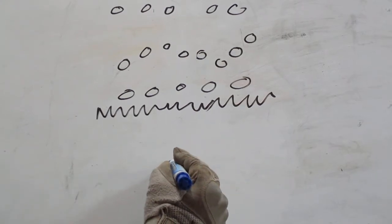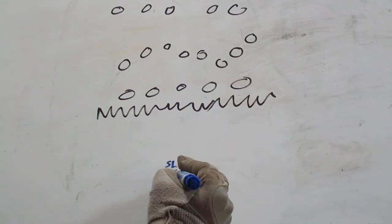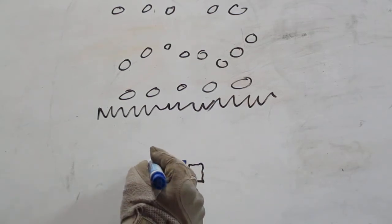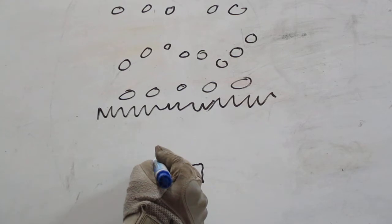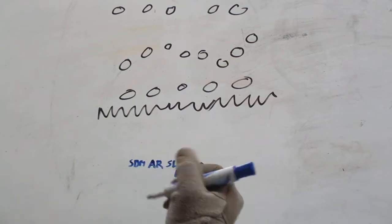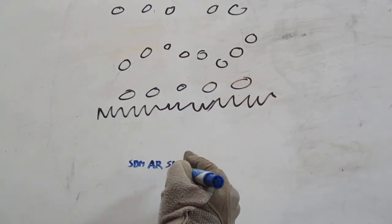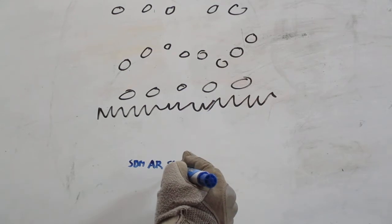Our squad leader, the assistant team leader, rifleman who is our grappler, the auto rifleman, and the squad designated marksman. Squad leader points out to the assistant team leader and the grappler where the breach point is going to be.